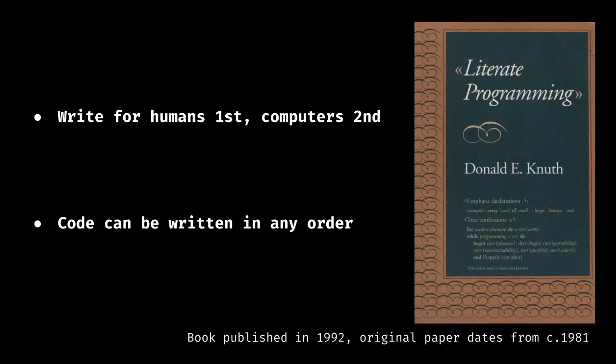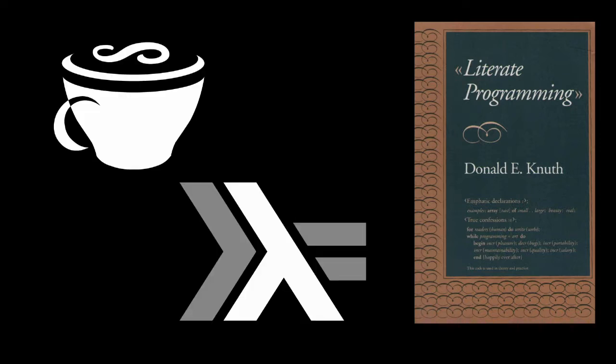The literate programming paradigm, as conceived by Knuth, represents a move away from writing programs in the manner and order imposed by the computer, and instead enables programmers to develop programs in the order demanded by the logic and flow of their thoughts. Knuth wrote his first version for Pascal. In modern languages, you can write your functions in any order, so modern literate programming focuses on writing for humans first. Two languages you may have heard of support this model natively: CoffeeScript and Haskell.